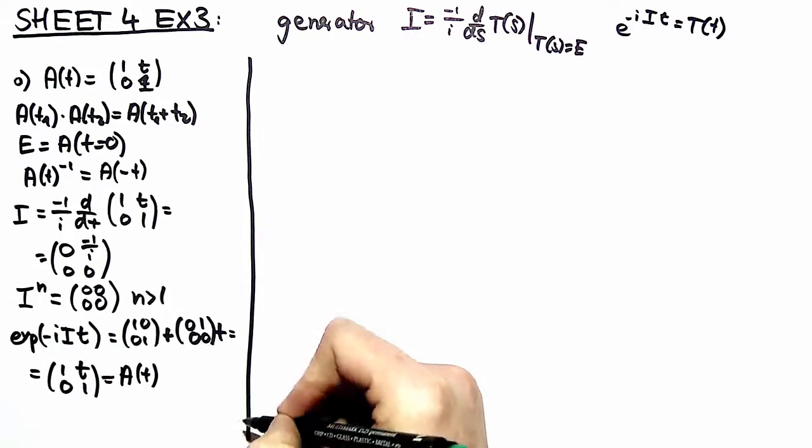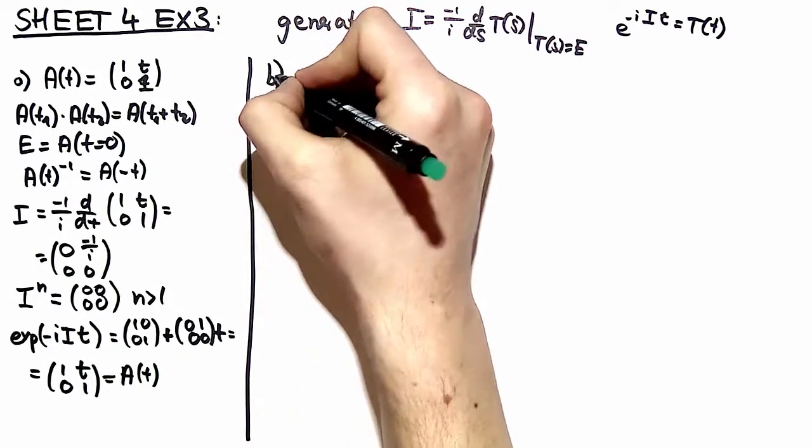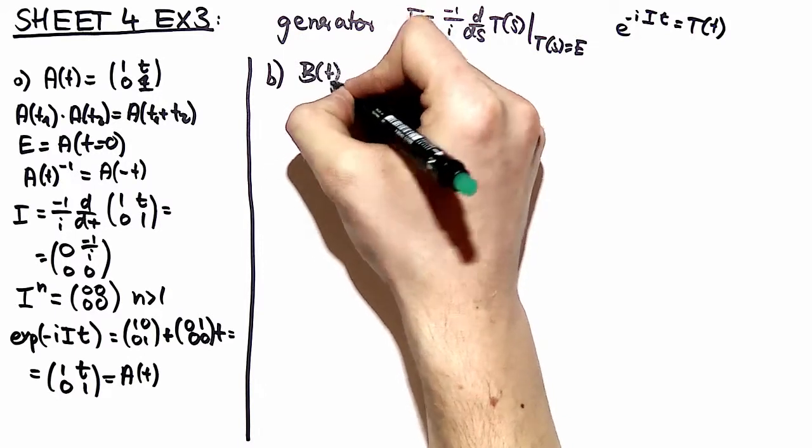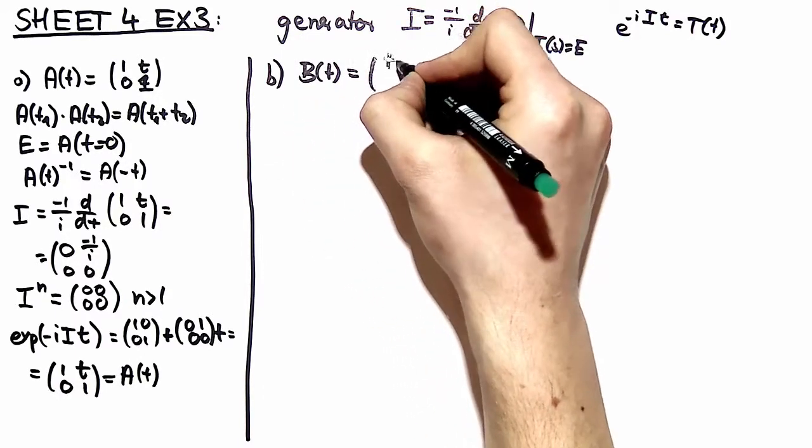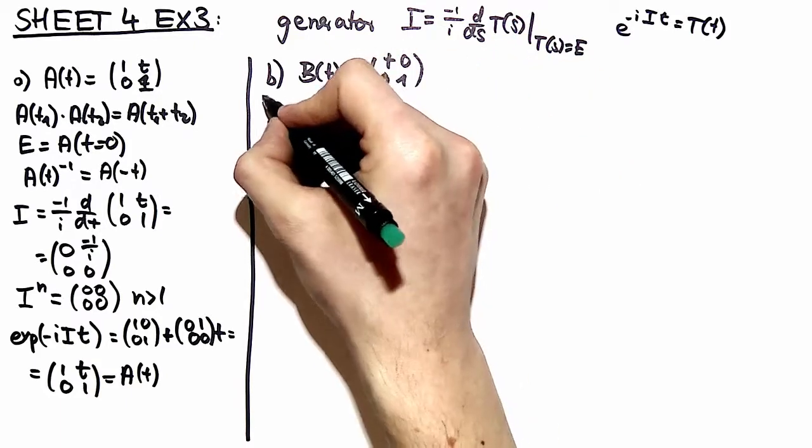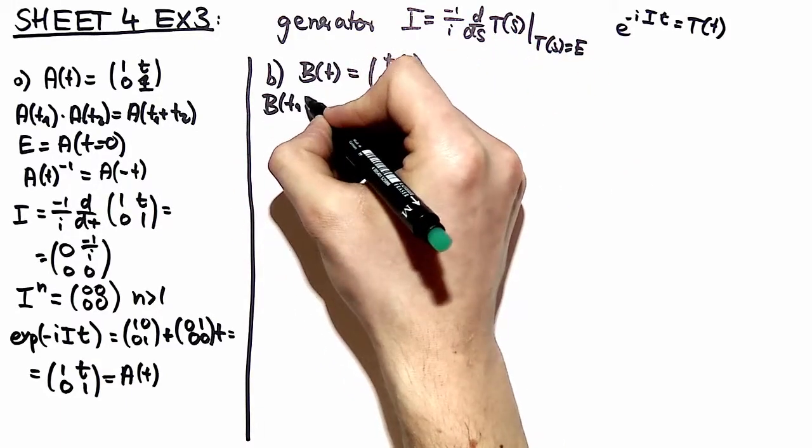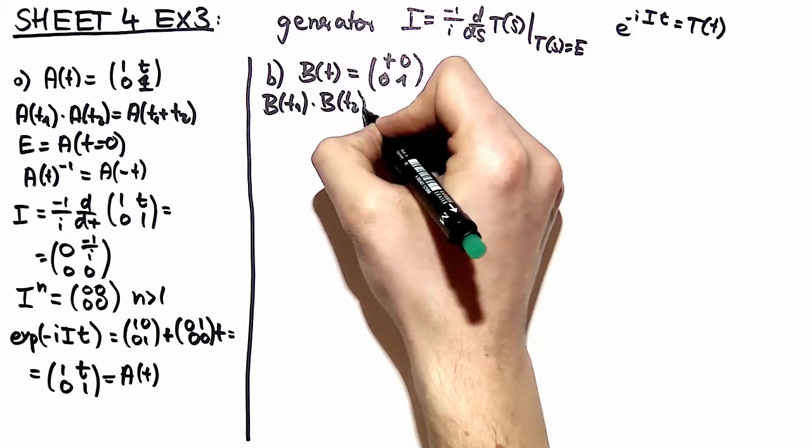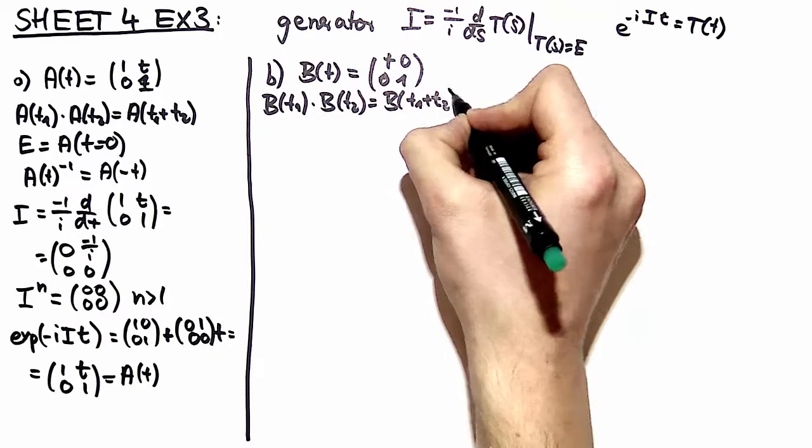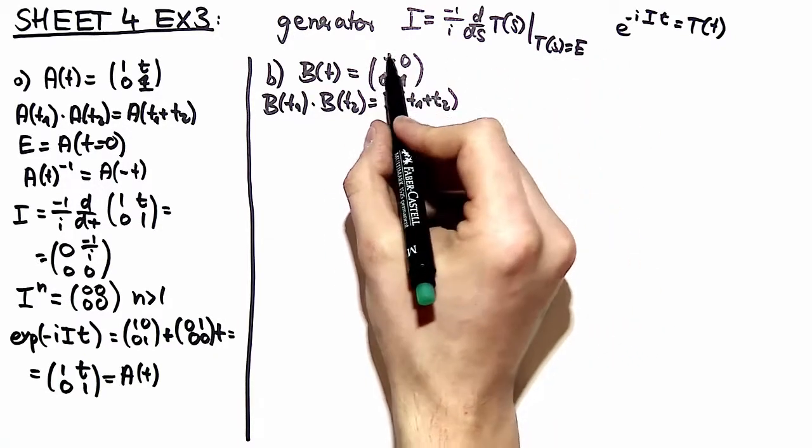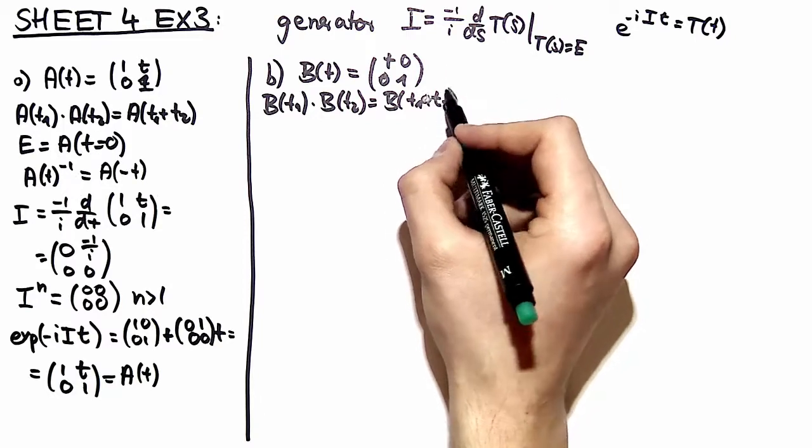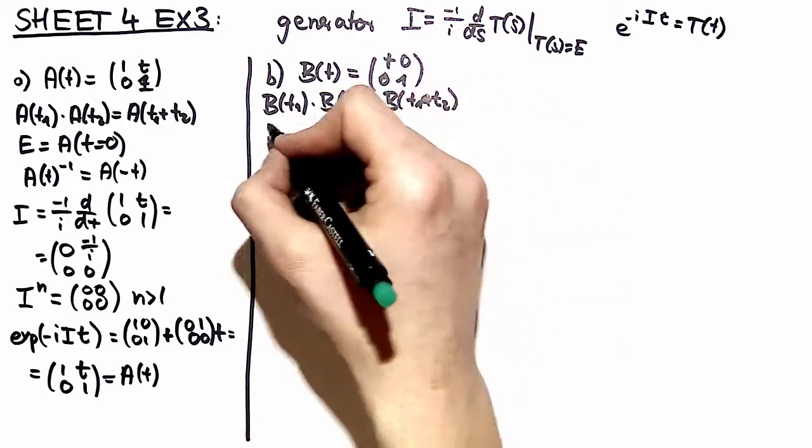So this was fairly easy so we can go to a little more difficult problem. We take a different matrix, we take t and 1 being on the diagonal and everything else being 0. By taking the matrix multiplications even easier than before because we have only diagonal elements.